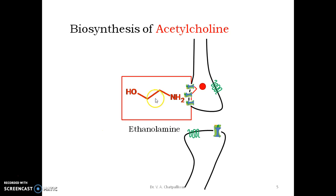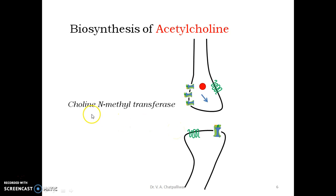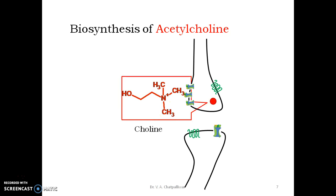An enzyme called serine decarboxylase decarboxylates serine, removing the carboxyl group and converting it into ethanolamine. This ethanolamine is then acted upon by choline N-methyltransferase enzyme, whose role is to methylate the nitrogen in ethanolamine. It is methylated thrice, and this tri-N-methylated ethanolamine is called choline.